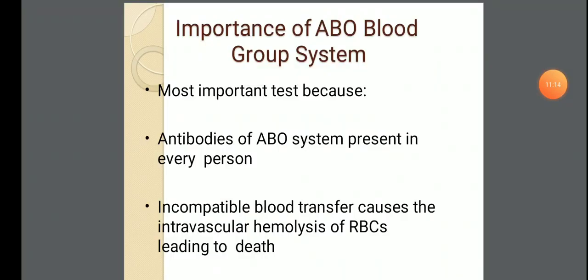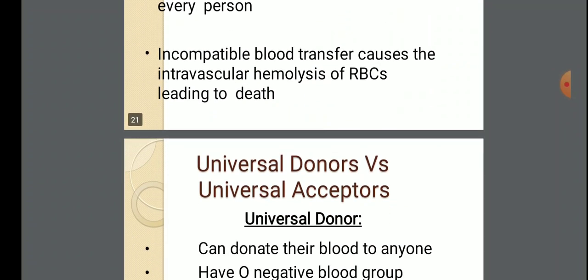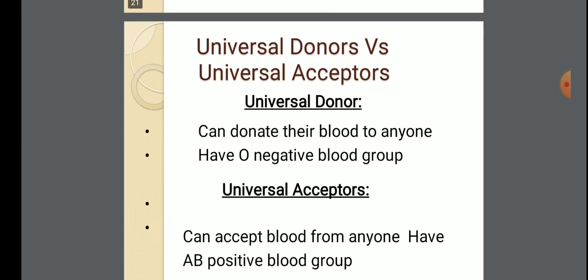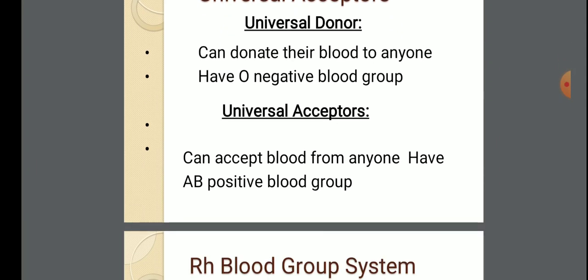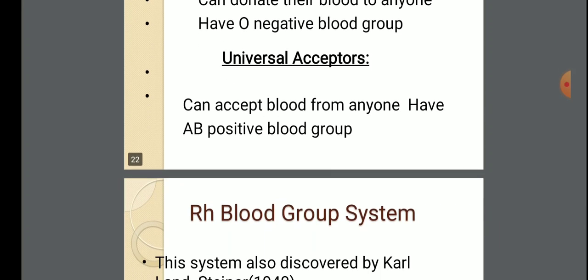Incompatible blood group transfer causes intravascular hemolysis of RBCs, leading to death. The universal donor has O negative blood group and can donate blood to anyone. The universal acceptor has AB positive blood group and can accept blood from anyone.